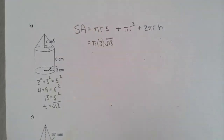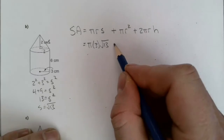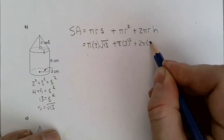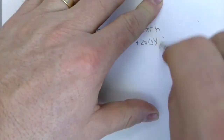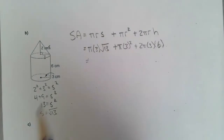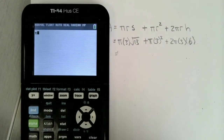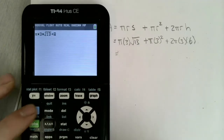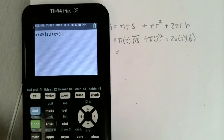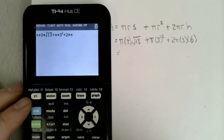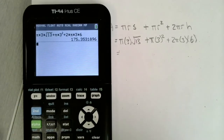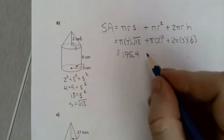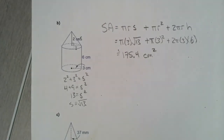I'm not going to evaluate that now — I'll incorporate it into my calculation on the calculator. So: pi times 3 times the square root of 13, plus pi times 3 squared, plus 2 times pi times 3 times 6. Pressing enter, and we're going to get approximately 175.4 centimeters squared. That's the surface area of our composite solid.